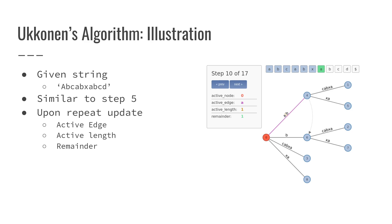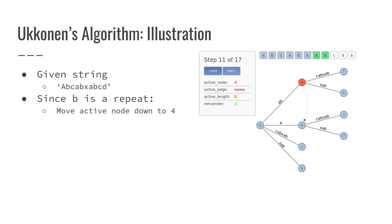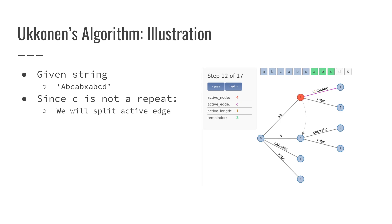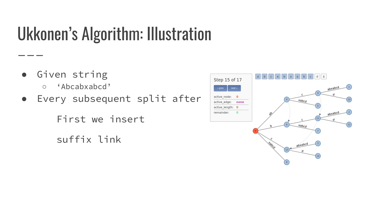Skipping ahead to step 10: similarly to step five, since we have encountered a repeated character, we update the active edge, active length, and remainder. Since we have found another repeat, we move the active node down from zero to four, and then repeat as usual what we did before. We attempt to split our active node. Once we encounter C — which is no longer a repeat — we do that split. Here is the result after we've split our active edges and inserted the suffix links.